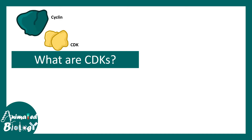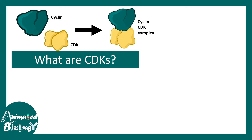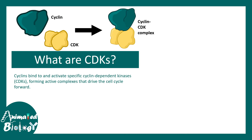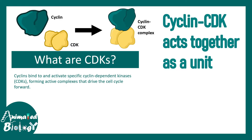And what are CDKs? CDKs are cyclin-dependent kinases. They are kinase molecules capable of phosphorylating, but they are highly dependent on their partner, which is cyclin. Without cyclin, CDK cannot perform any work — they are like a couple. Cyclin and CDK act together as a unit. This is the take-home message.